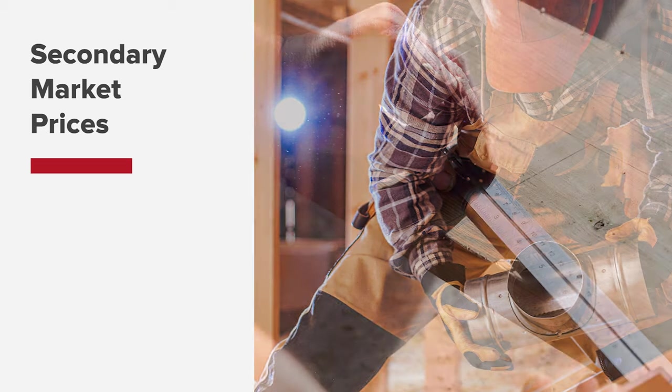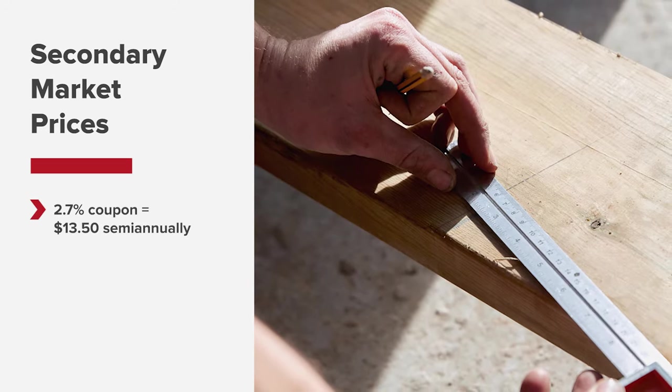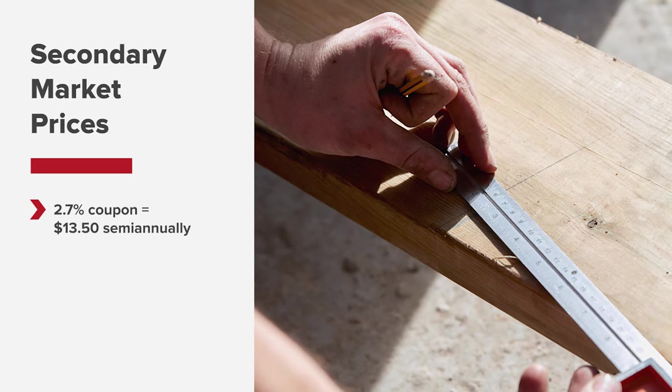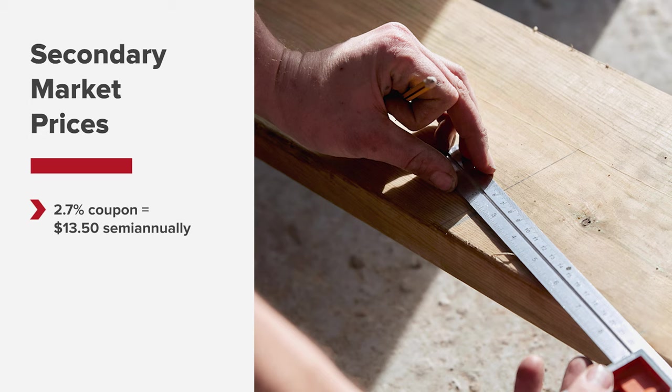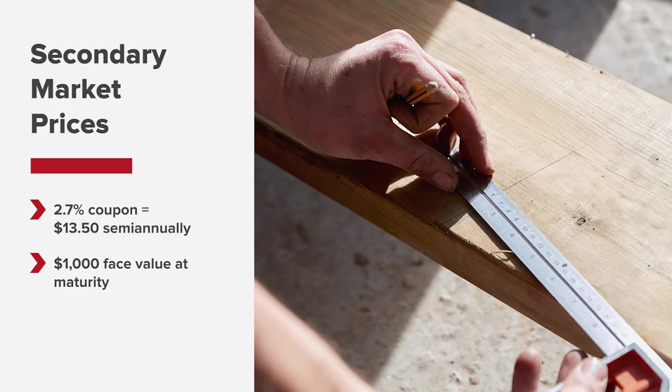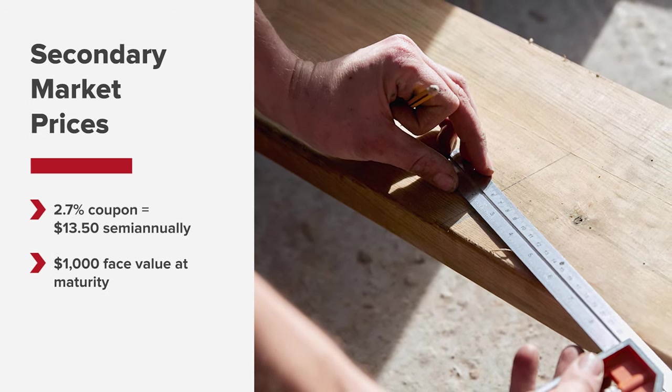An investor that decides to purchase this premium bond will receive the 2.7% annual coupon, which pays out every six months, or $13.50 on a semi-annual basis, as well as the bond's face value of $1,000 when it matures in 2030.